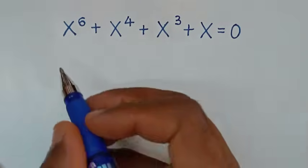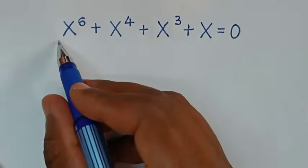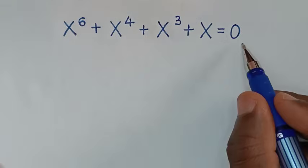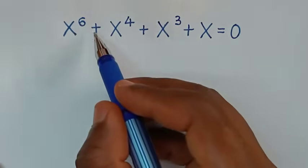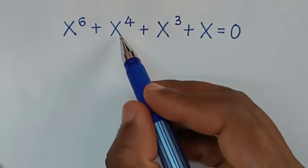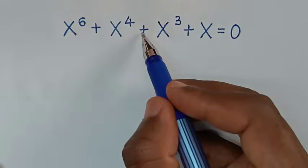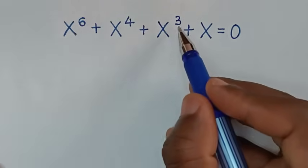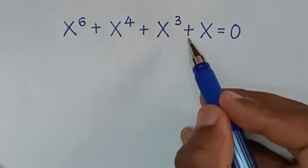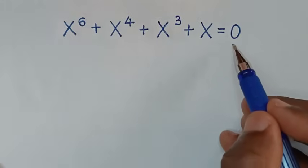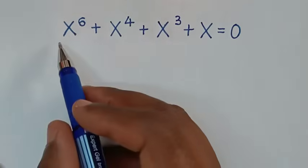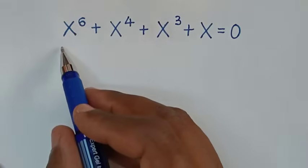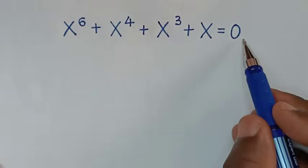Hello, you are welcome to solve this math problem which is x power 6 plus x power 4 plus x power 3 plus x is equal to 0, to find the values of x from this equation.